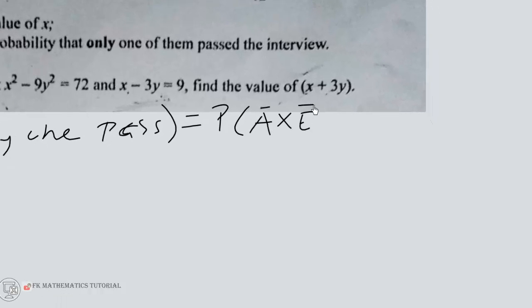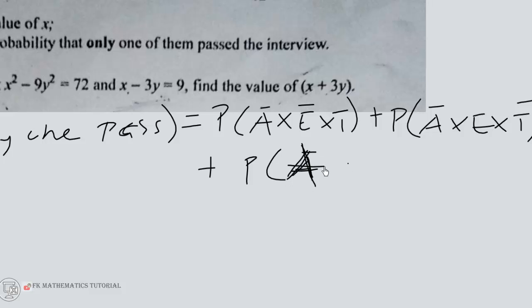E also failed, but T passed. Then we have A failed, but T also failed. Then we have A passed, E failed, T also failed.